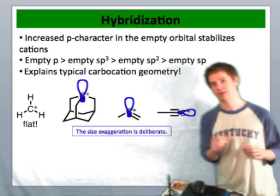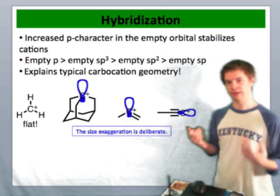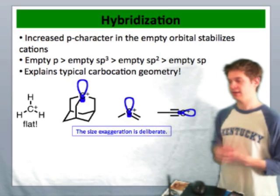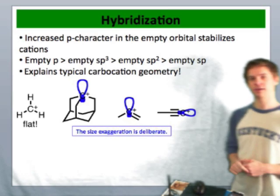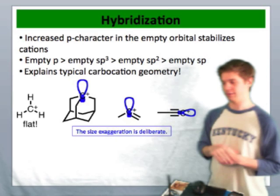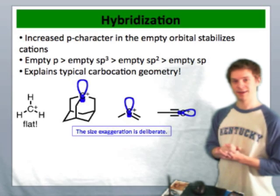Moving on to a final cation, which is necessarily sp2 hybridized, we're placing positive charge or leaving an empty orbital as an sp2 hybrid orbital, introducing slightly more p character and yet again destabilizing.